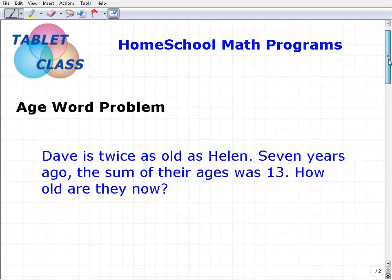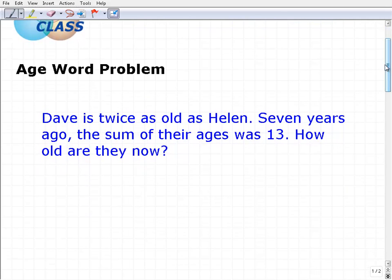Here's the problem. I classify this as an age word problem, a very typical type in Algebra. Dave is twice as old as Helen. Seven years ago, the sum of their ages was 13. How old are they now?